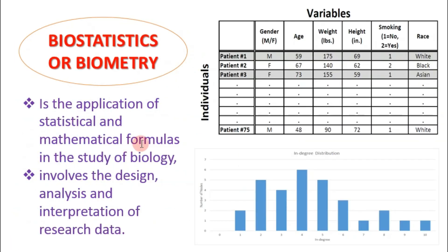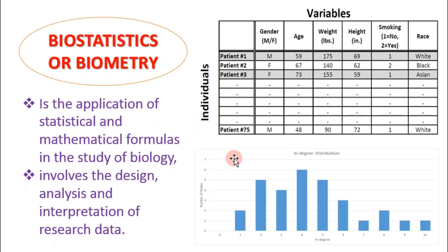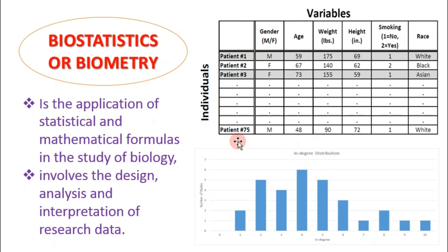Biostatistics, also called biometrics, is the application of statistical and mathematical formulas in the study of biology. If we study biological problems, we do analysis of data and graphs using biostatistics. For example, if there is a disease in an area, such as coronavirus, we use biometrics to analyze it.